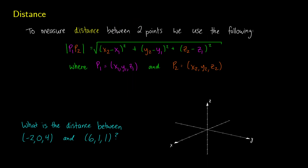Let's talk about distance between points. Now that we understand the third dimension, how can we find the distance between two points? In two dimensions, if you have one point at (x1, y1) and another at (x2, y2), you use Pythagoras' theorem. You take the change in x — that's x2 minus x1 — and the change in y — y2 minus y1 — and use Pythagoras' theorem to get the distance.